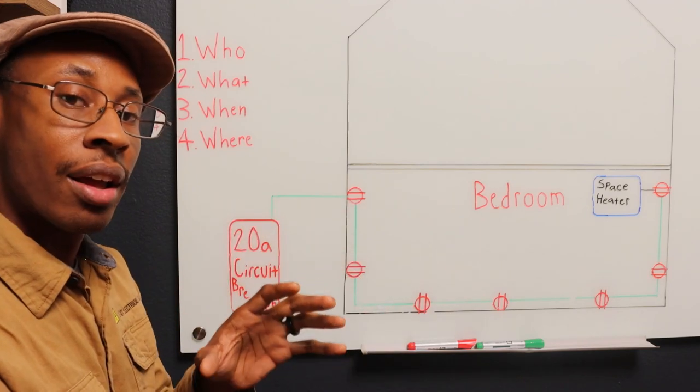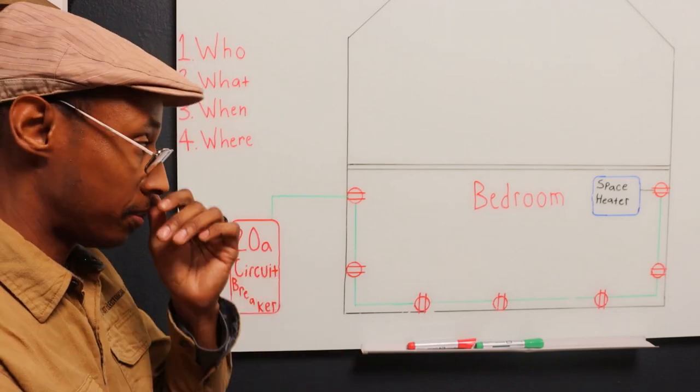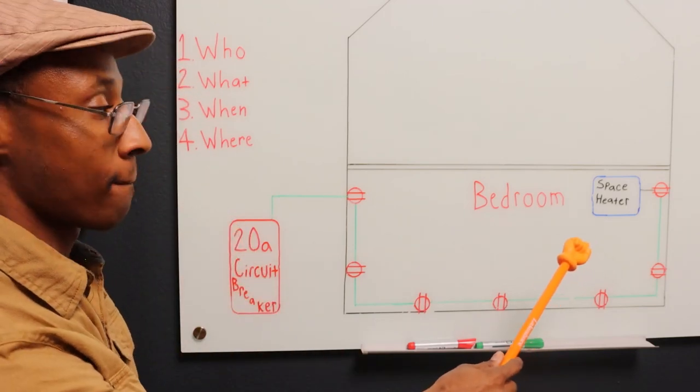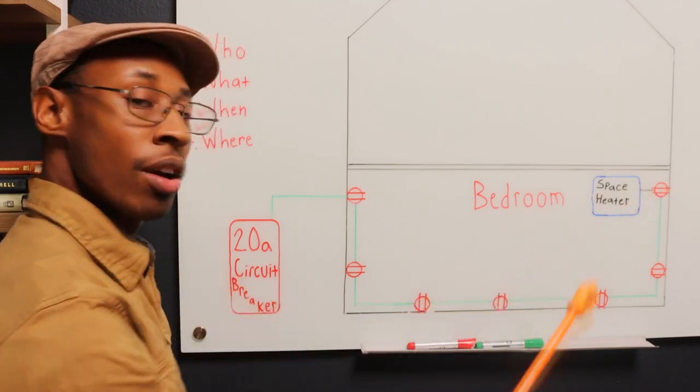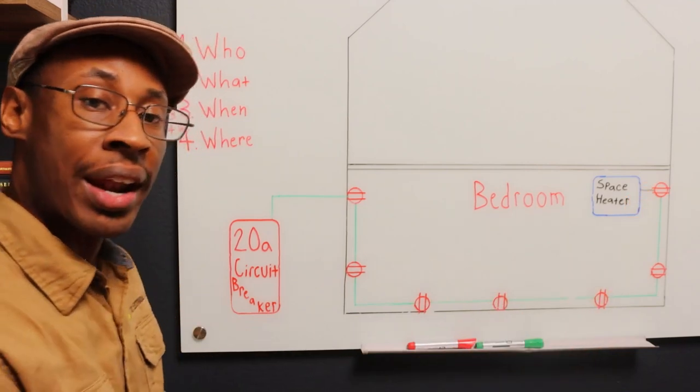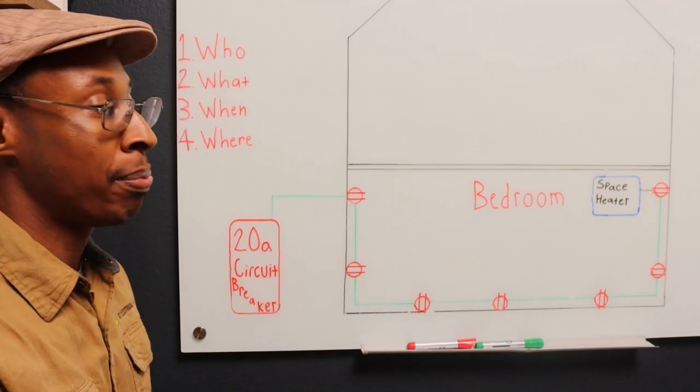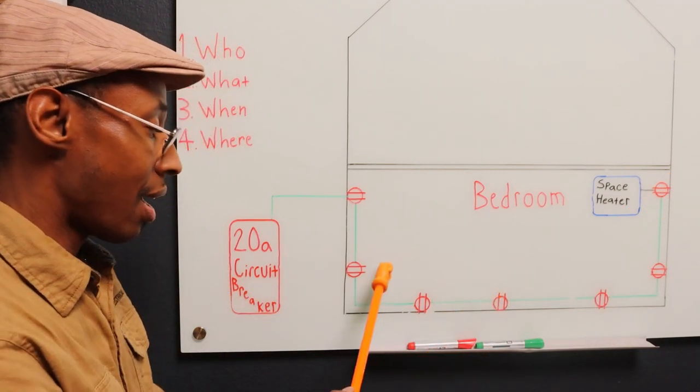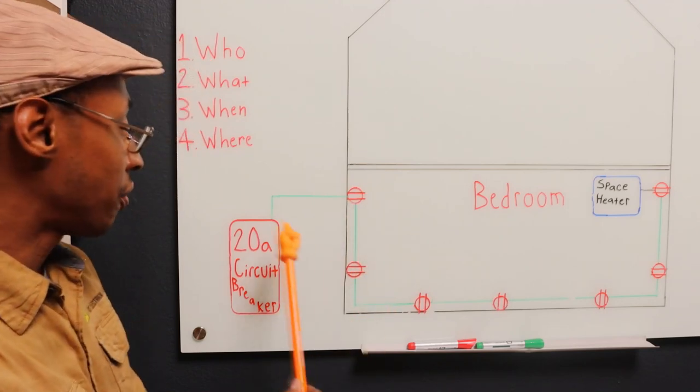Space heater is the number one fire starter in the winter. The next reason: that space heater will burn up that outlet, it'll melt the outlet because of the amps that's being pulled.